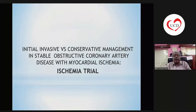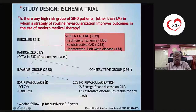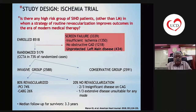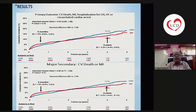In the ISCHEMIA trial, patients with angina and documented moderate-to-severe ischemia on various stress tests were randomized to an invasive group versus a conservative group. Three-quarters had CT coronary angiography and many had prior coronary angiography, so coronary anatomy was known in most. Unprotected left main was an exclusion criterion. Of the invasive group, 80% were revascularized — three-quarters with PCI and one-quarter with CABG — and 20% were not revascularized due to unsuitable anatomy. The primary outcome of CV death, MI, hospitalization for unstable angina, heart failure, or resuscitated cardiac arrest was similar in both groups.